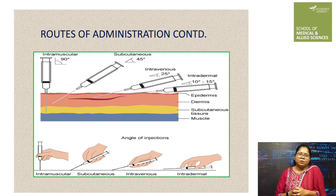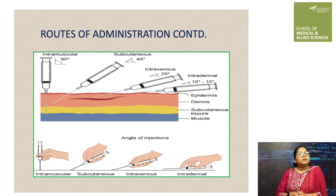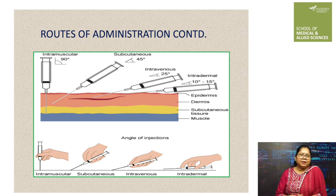The subcutaneous route, also called hypodermic administration, involves injecting a drug into the loose connective tissue of the skin. It is usually performed on the external side of the arm and thigh, and on the anterior face of the abdomen. Subcutaneous injections are administered at a 45-degree angle with a 25 to 26 gauge needle, though in lean or obese patients the injections should be administered closer to a 90-degree angle.